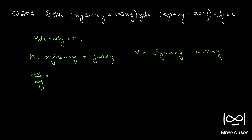∂M/∂y is equal to — treating x as a constant — this will be a product of two functions. So x into y²·sin(xy): y² into differential of sin(xy) which is cos(xy) into differential of xy, so x, plus sin(xy) into 2y.